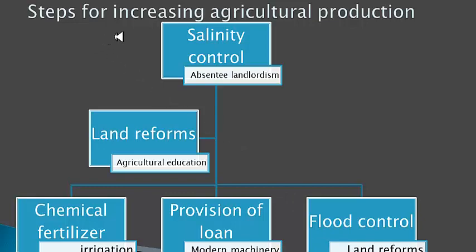In this previous lecture you read about the causes of low agricultural produce in Pakistan. Now, to overcome the reasons behind low agriculture, there are certain steps and measures that can increase agricultural production. The first is salinity control.